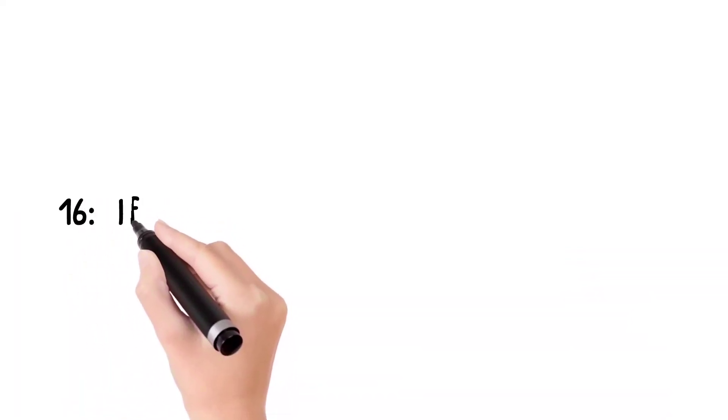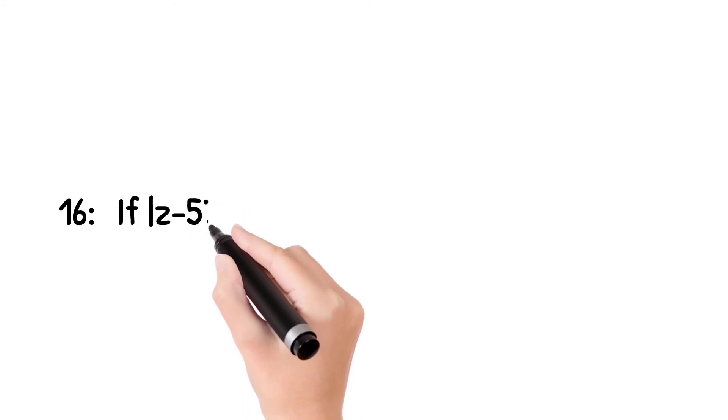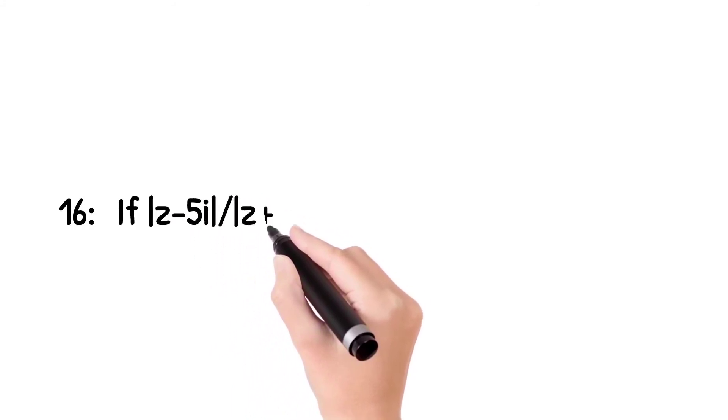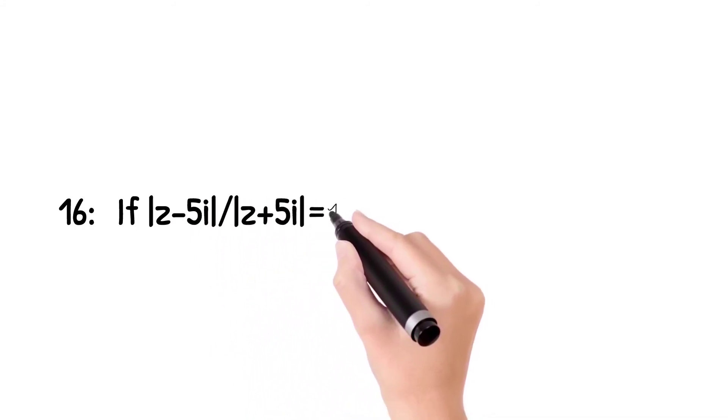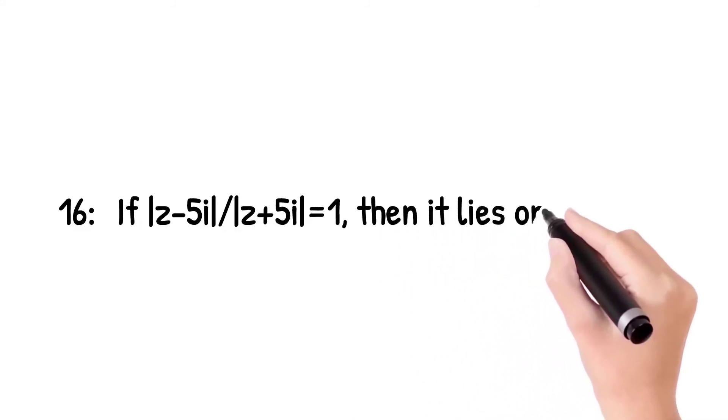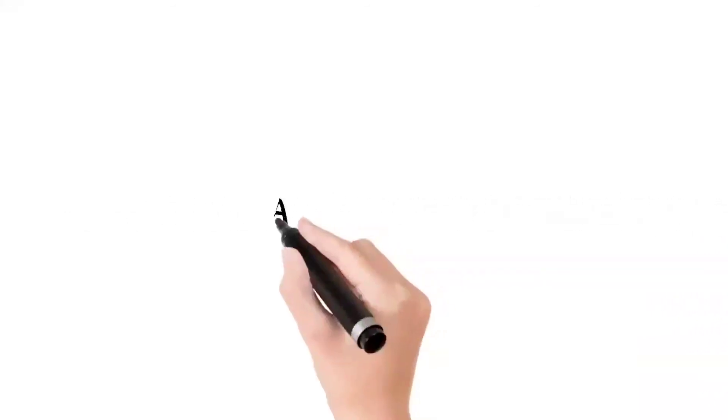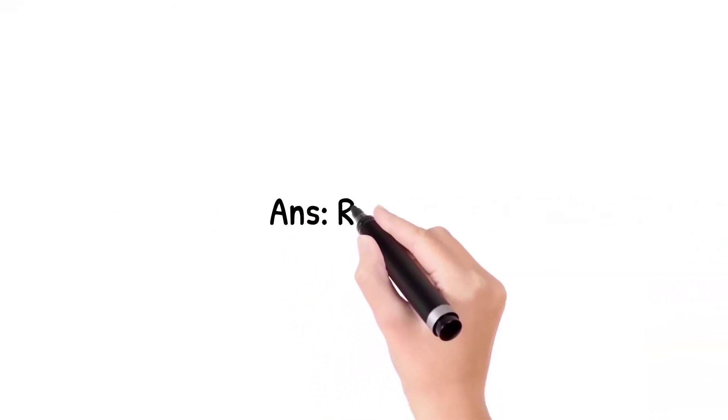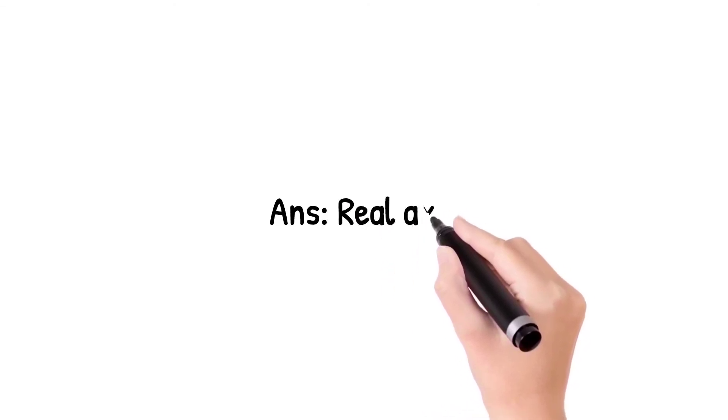Question number 16: If the given function is absolute value of z minus 5 iota divided by z plus 5 iota equals to 1, then this function lies on? Answer is real axis.